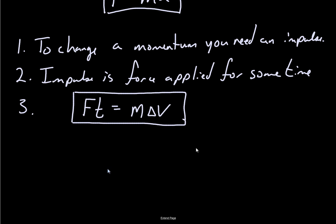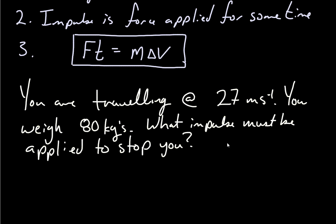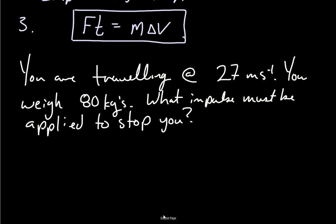Okay, let's do an example problem. You're traveling at 27 meters per second — that's 100 kilometers per hour. You happen to weigh 80 kilograms. What amount of impulse must be applied to stop you? If you're stopped, what's your momentum? When your velocity equals zero, your momentum equals zero. So that's an important thing to think about.